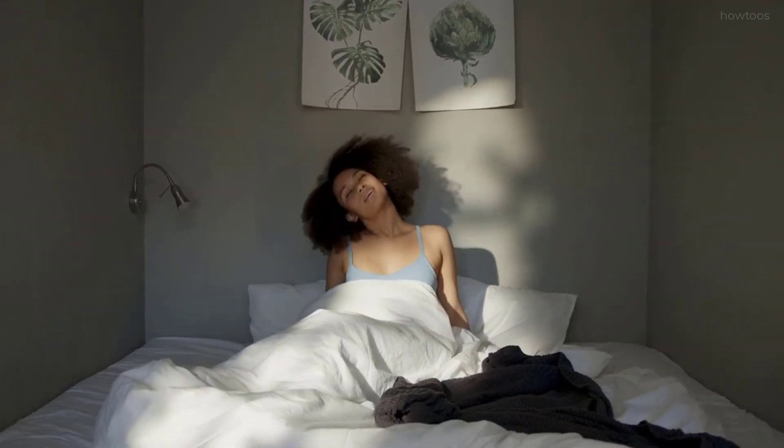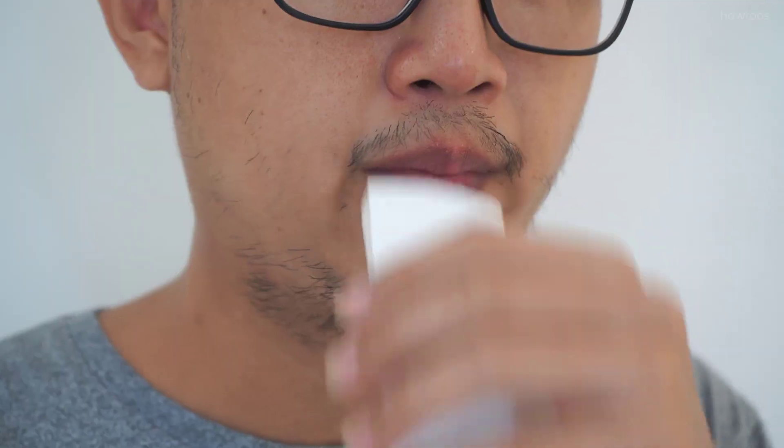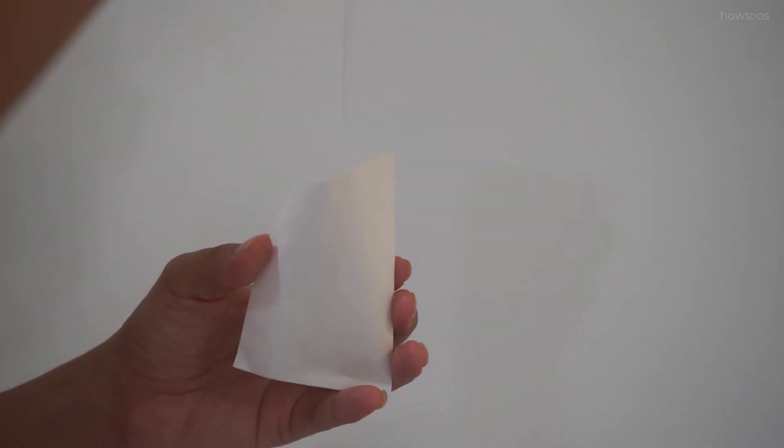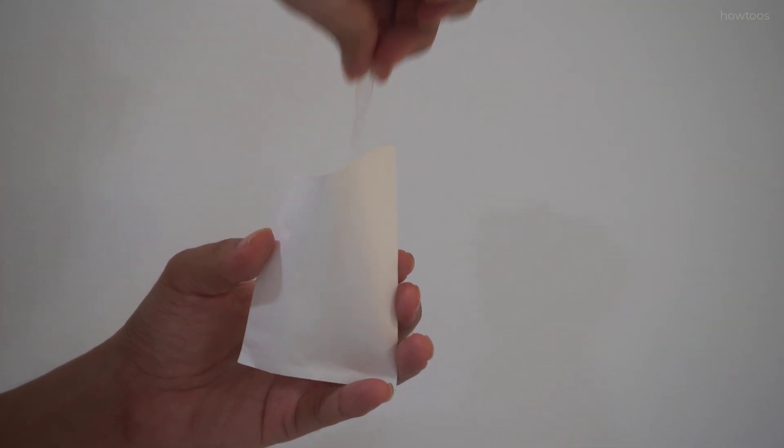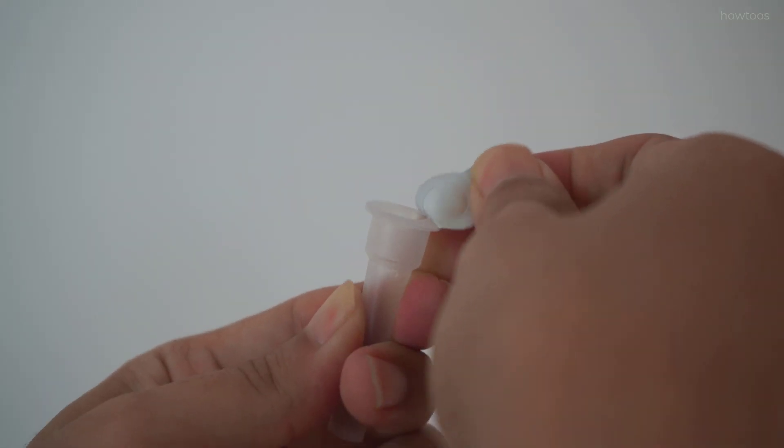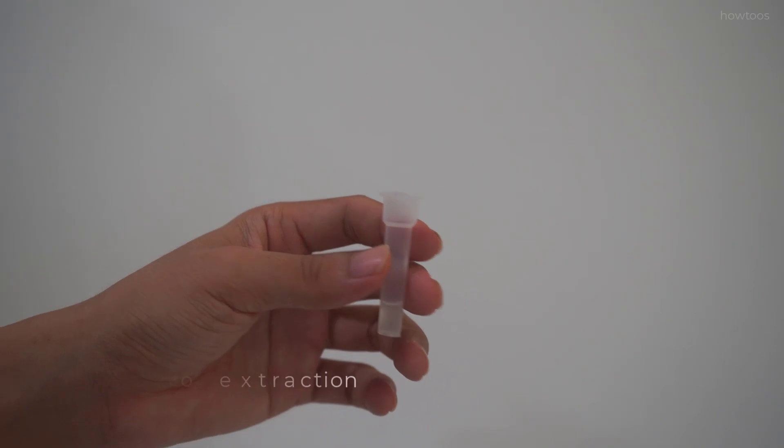Take a deep breath. Expectorate deep cough sputum into the paper cup container. Use the sputum dropper to transfer around three drops of sample into the sample extraction tube. Open up a new sample extraction tube. Drop three drops of sample into the extraction tube.